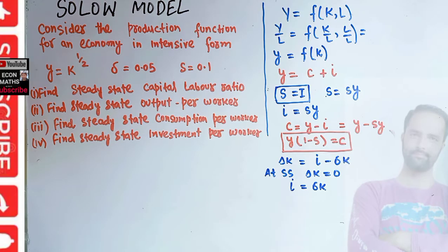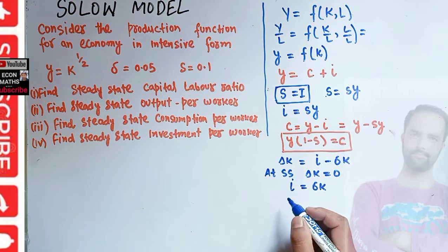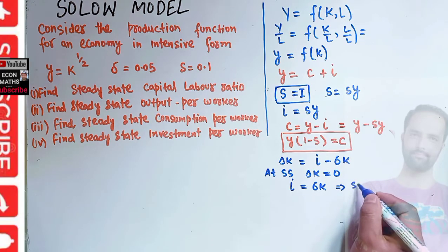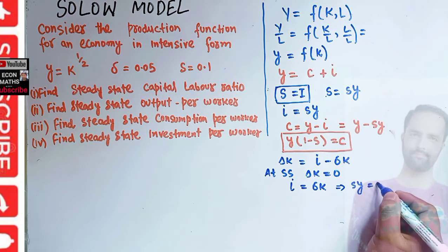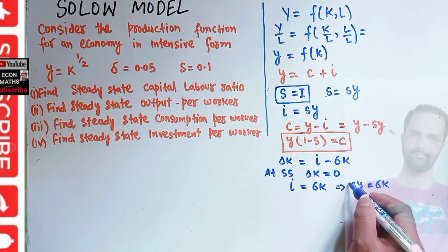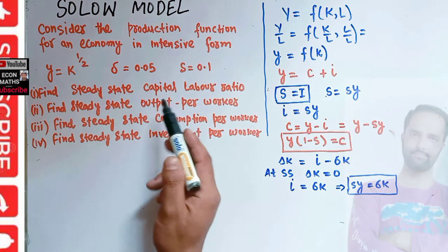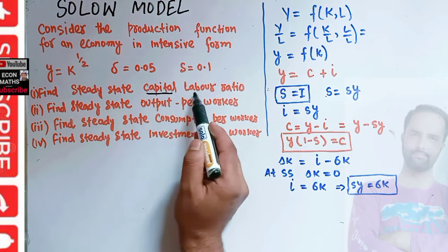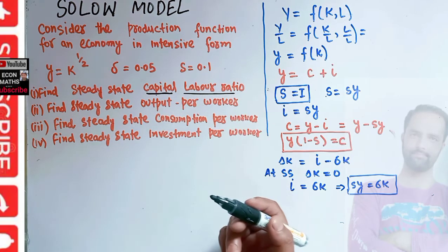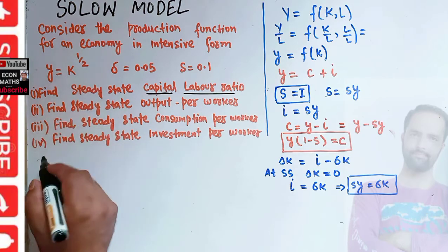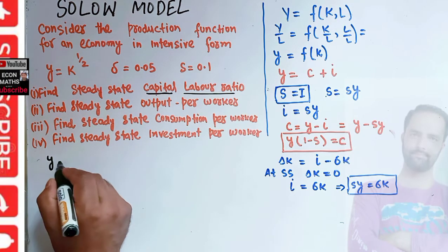Now we can solve the given question. Since i equals s times y, I can write s times y equals delta-k. This will be used in solving the given problem. The first part is to find the capital-labor ratio — capital per worker. We are given output per worker y equals k to the power one upon two.